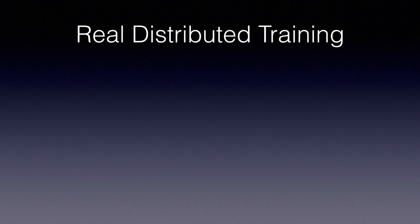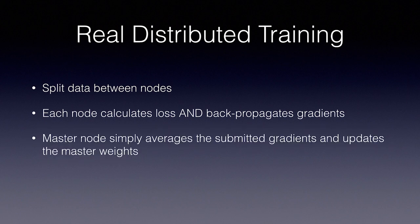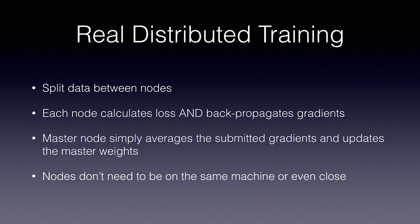So for true distributed training, you would not only split up the data between nodes — each node will not only feed the training data forward through the network and calculate the loss against the expected output — but it will also run backpropagation and compute gradients. This leaves the master node with the light work of simply averaging all the submitted gradients to update the master weights. The best part is that nodes don't even need to be on the same machine or even geographically close to each other. Both PyTorch and TensorFlow have built-in solutions to implement distributed training.